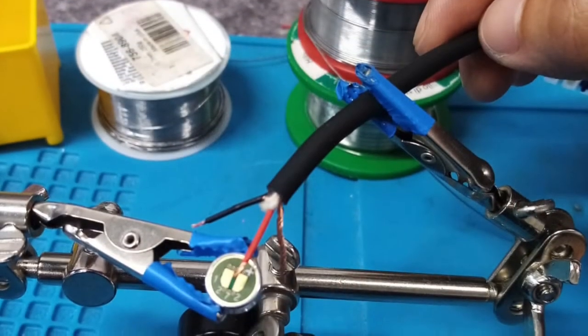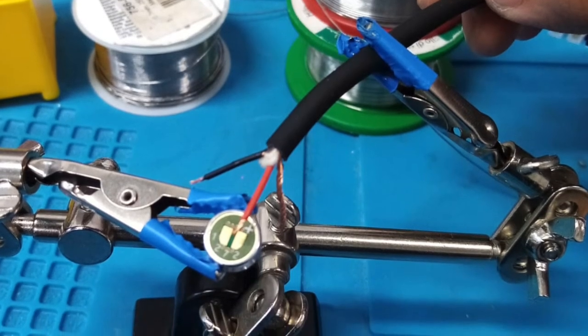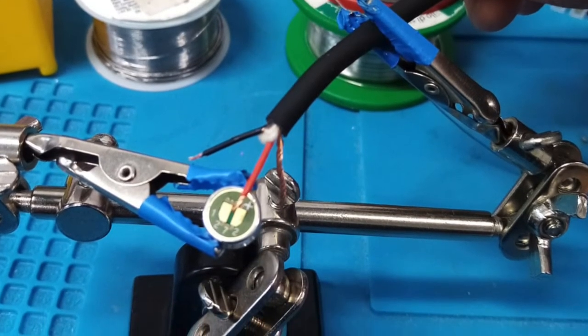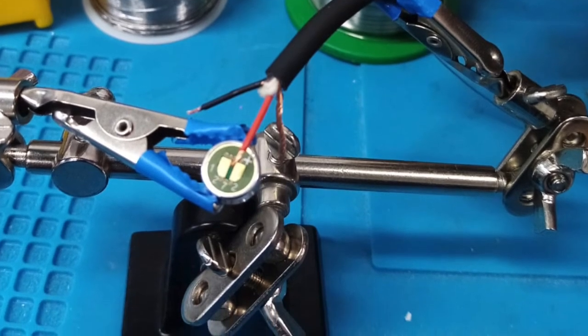Then secure the microphone capsules and the cable at the soldering clamp. To start soldering, make sure you have a cleaned solder iron tip, and then apply some solder wire at the hot solder iron tip.